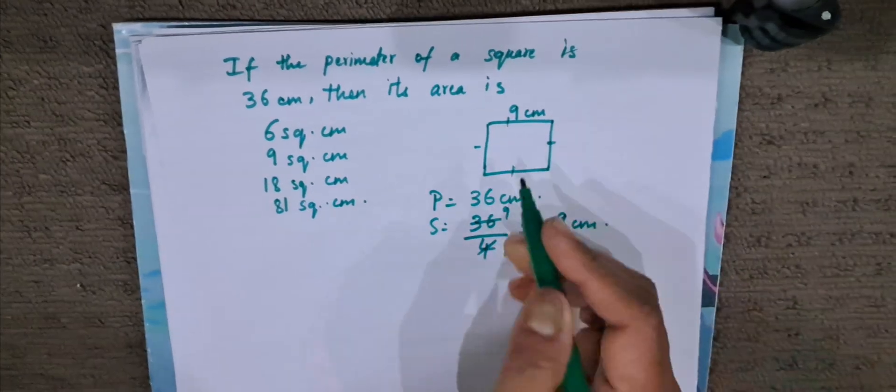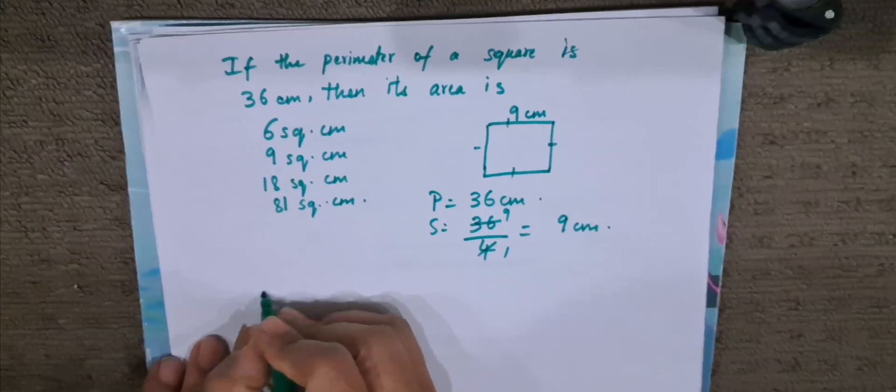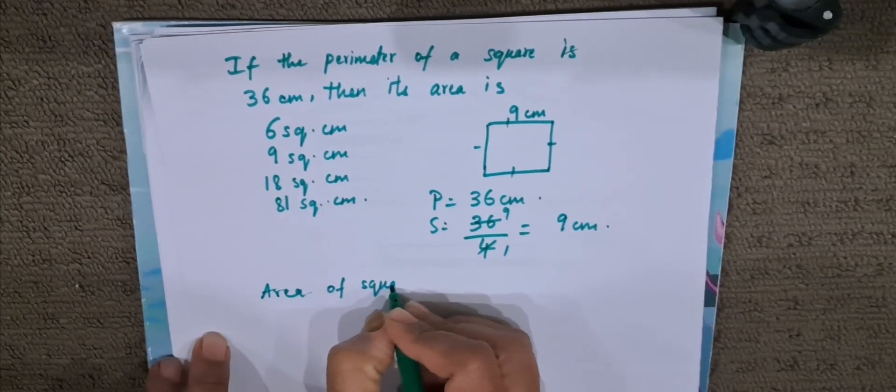Now it is easy to find the area. We got the side as 9 cm. So to find the area of square, what is the formula?